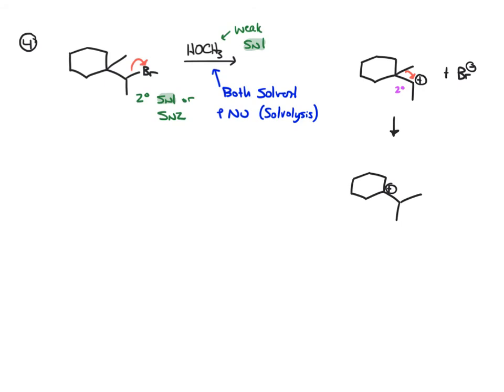Now that we're at our most stable carbocation, the nucleophile will add, and that's methanol. So use a lone pair on the oxygen. That will add to the positively charged carbon. And we'll draw the intermediate we get here. Now in this case, the oxygen has a proton on it and a CH3 group. It will also bear a positive charge.